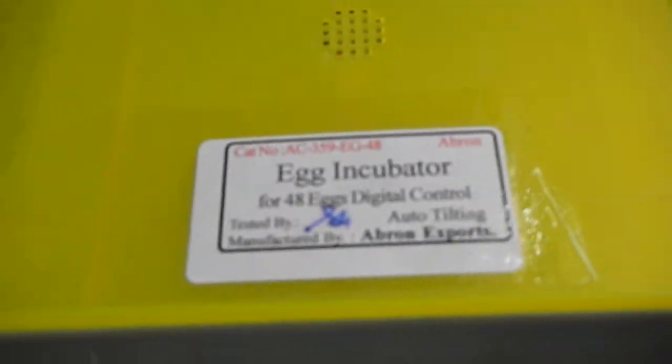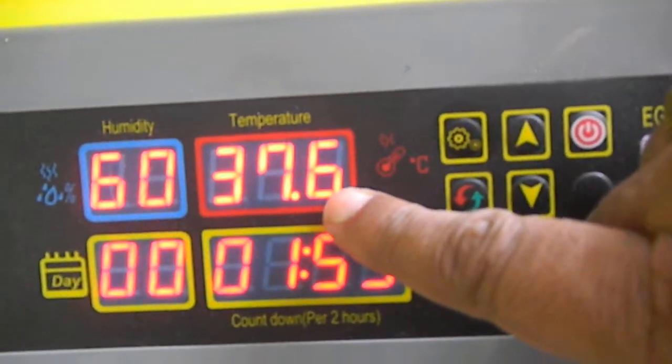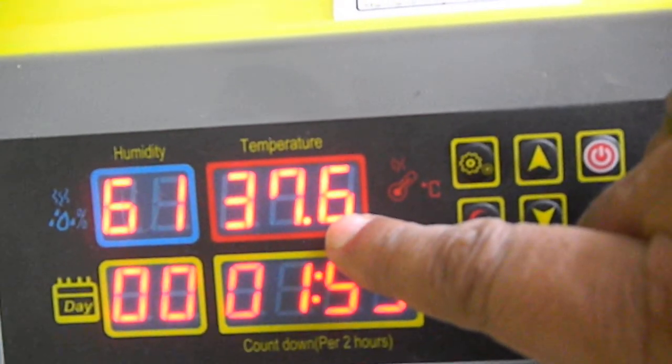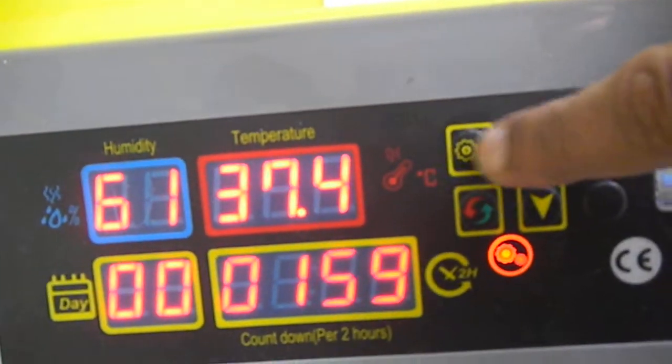This is a brown egg incubator for 48 eggs with automatic digital temperature control. The set temperature is 37.5 degrees, and you can check it here at 37.4 degrees.